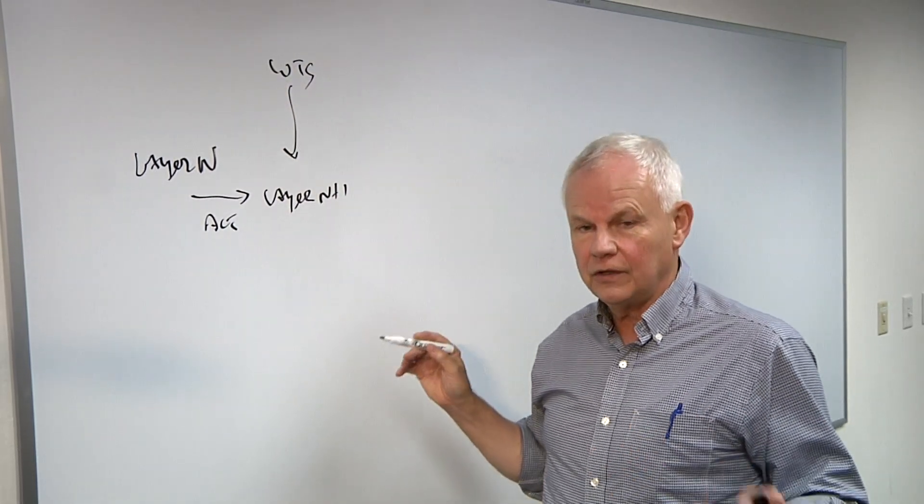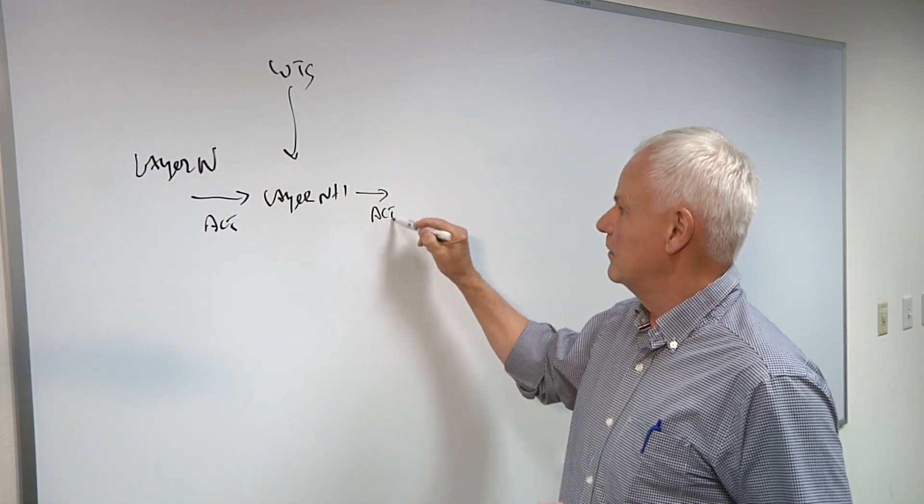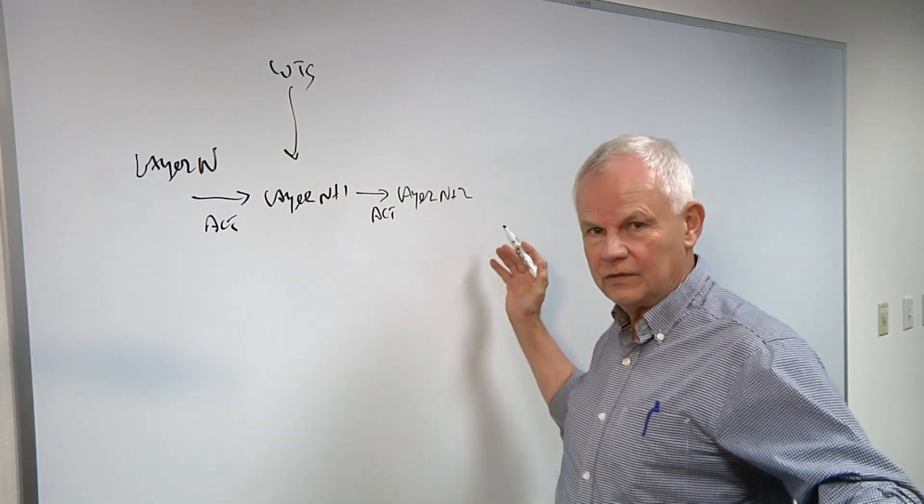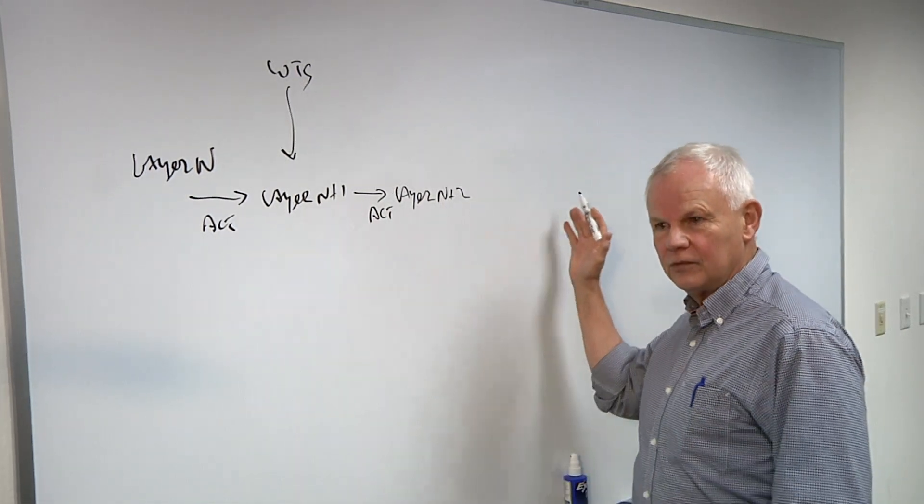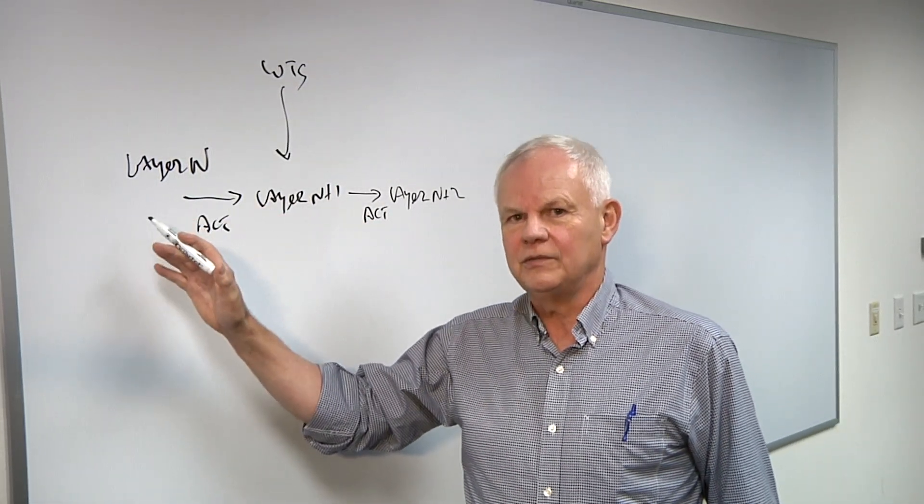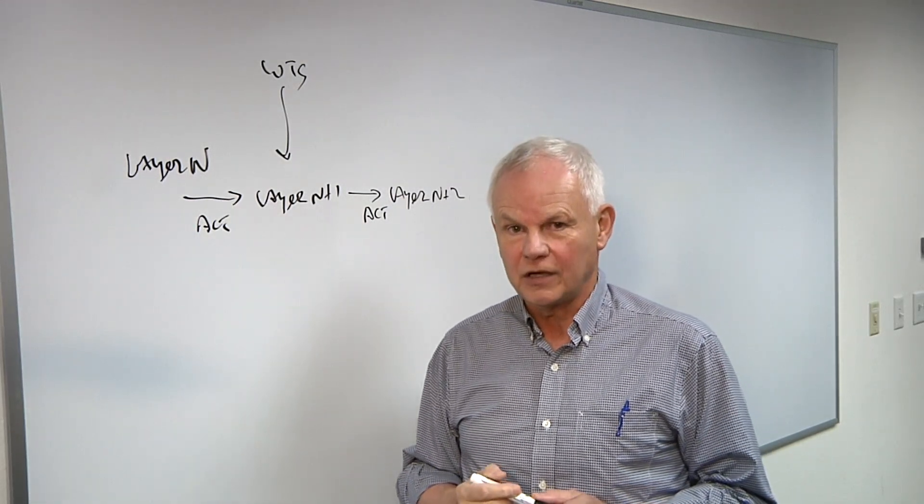like a convolution or a fully connected layer, etc. And the output of this is activations that go to layer N plus 2. And that continues for the length of the layer until you finally get a result. And the initial input is the image. So the very first input is the image or whatever the data set is that's being processed by the model.